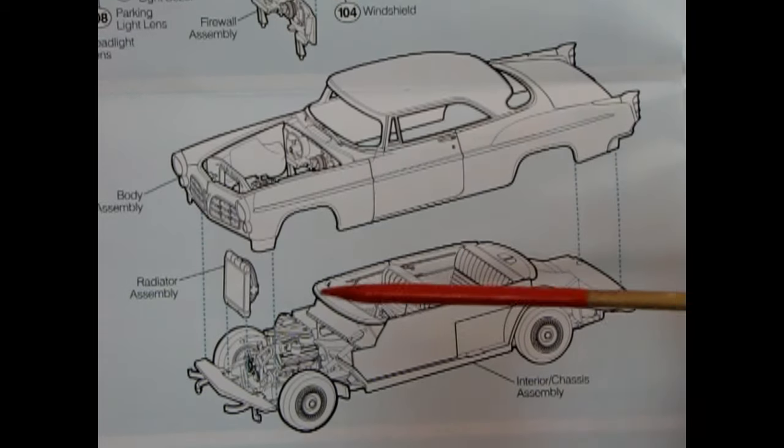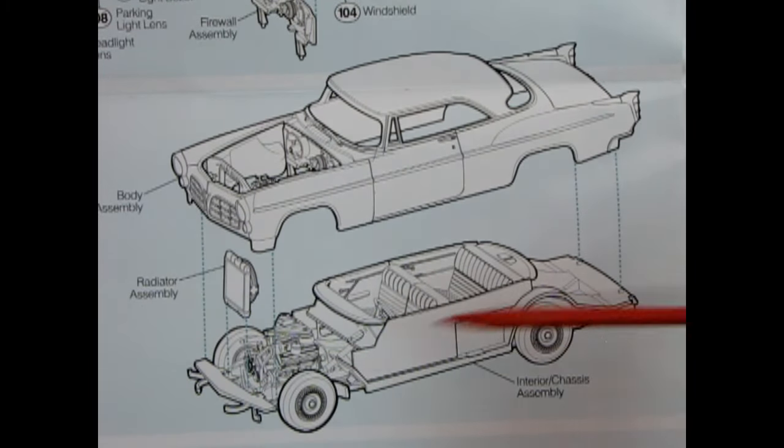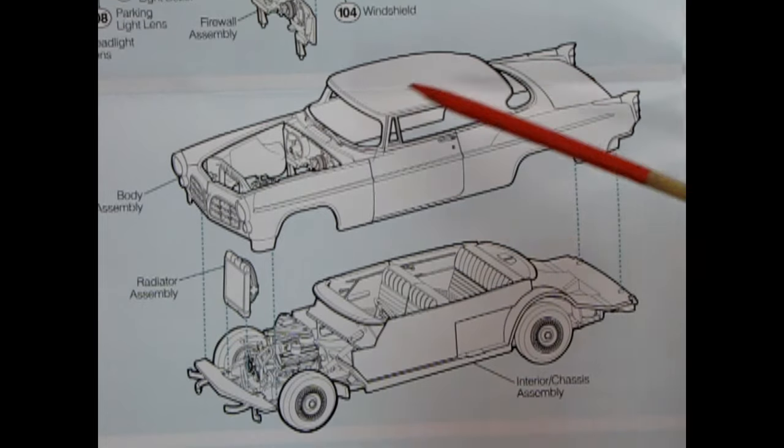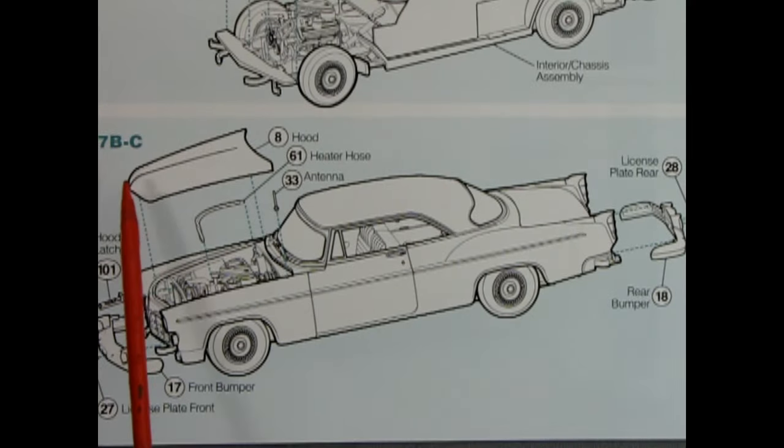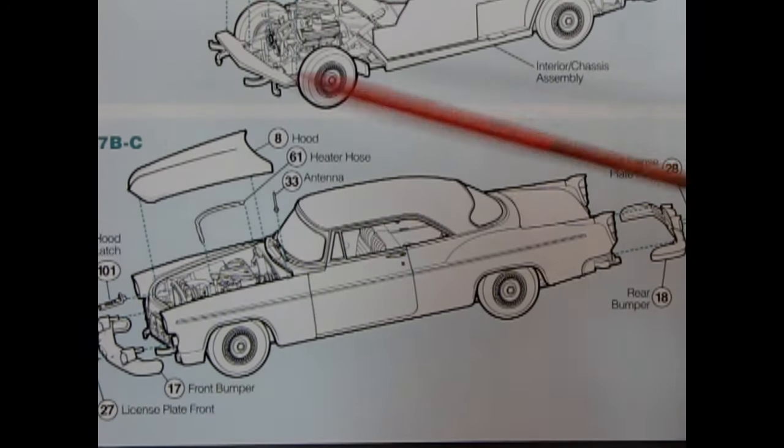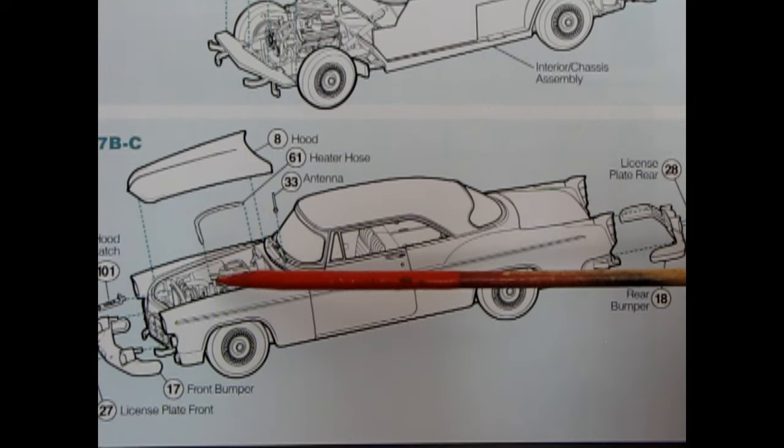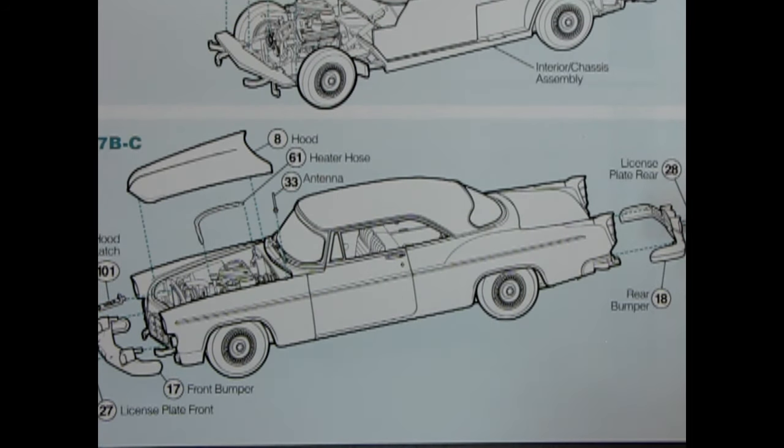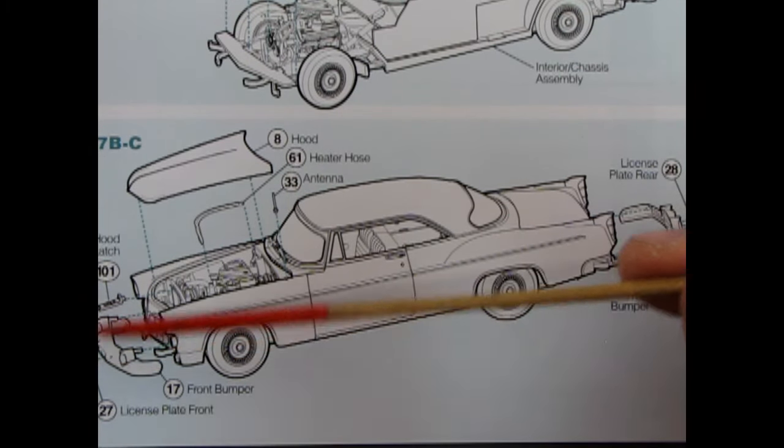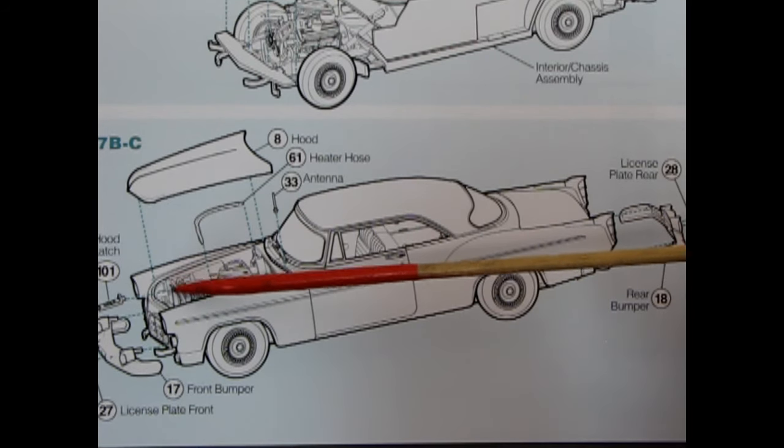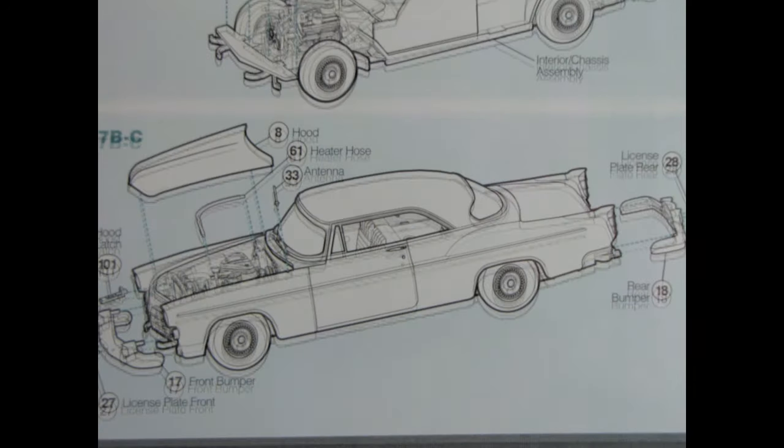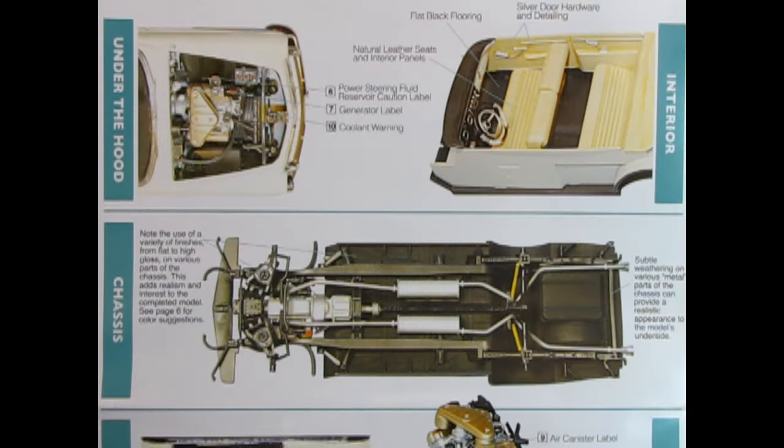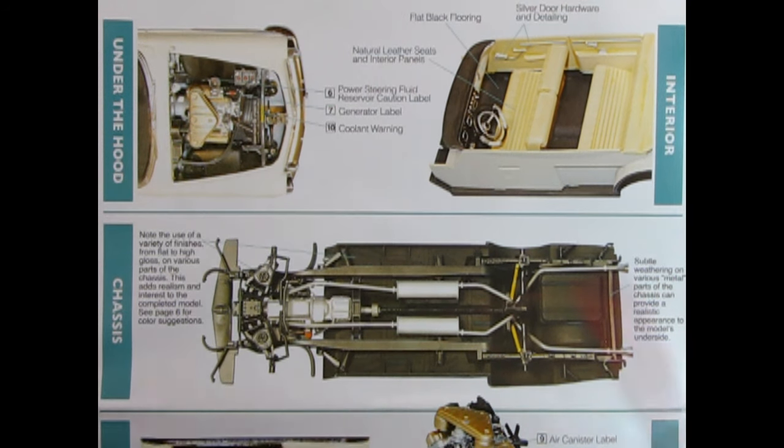Step 7 is our final assembly. We've got our radiator assembly being glued to the completed chassis and interior. And then the body drops on top of that. Steps B through C show our hood being dropped into place. We have our heater hose going in. The antenna as well. The rear bumper with the rear license plate and the front bumper with the front license plate. We also have the hood latch being glued in over this little bridge here from the front of the body to the radiator support wall.